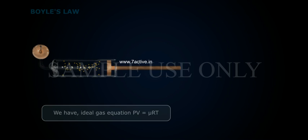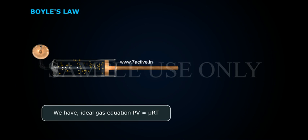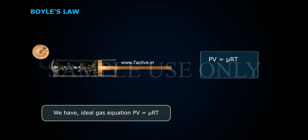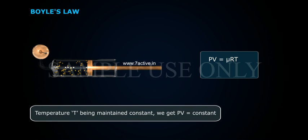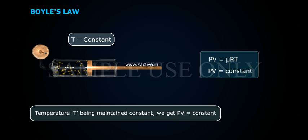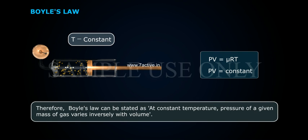Boyle's law. From the ideal gas equation PV = μRT, with temperature T maintained constant, we get PV = constant. Therefore, Boyle's law states that at constant temperature, the pressure of a given mass of gas varies inversely with volume.